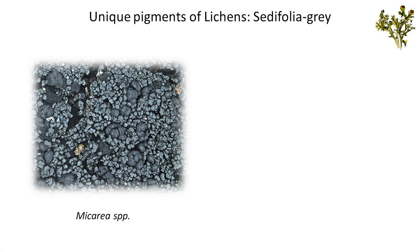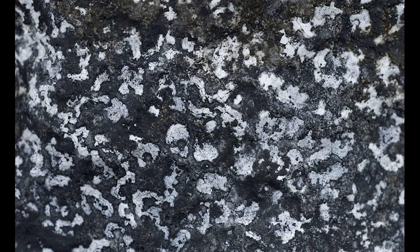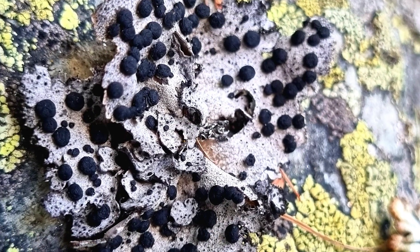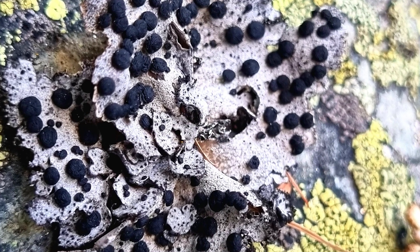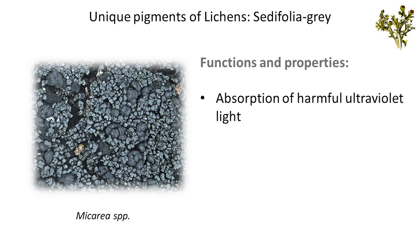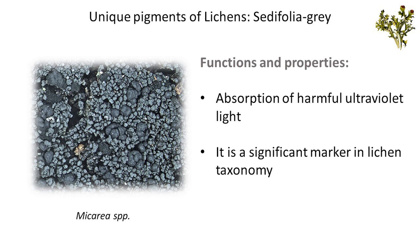Caloplaca gray is a unique pigment found in certain lichen species, particularly within the genus Mycaria. It is notable for its distinctive gray coloration and is found in the cortex and soredia of these lichens. Its presence gives the lichens their characteristic coloration, which can vary depending on the concentration and distribution of the pigment. The pigment helps protect the lichens by absorbing harmful ultraviolet light, providing an adaptive advantage. Additionally, this pigment is a significant marker in lichen taxonomy and helps distinguish between species within the same genus or closely related genera based on their chemical profiles.